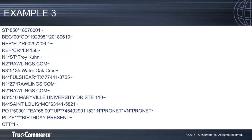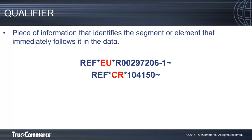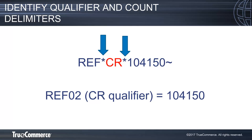Lastly, let's look again at our larger data sample and find the data in the REF02 position. Notice that there are multiple REF segments. When there are multiple segments, it is important to know the qualifier for that segment. A qualifier is a piece of information that identifies the segment or element that immediately follows it in the data. In these two REF segments, the qualifiers are EU and CR. Therefore, if we want to know what data is being sent in the REF02 with the CR qualifier, we locate the correct REF segment with the CR qualifier, count two delimiters, and see that the value is 104150.